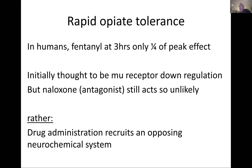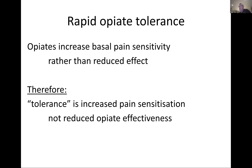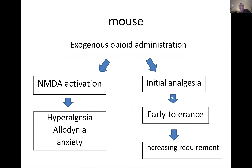Tolerance is not only due to down-regulation of mu receptors. We use a lot of fentanyl, which is short-acting, and at three hours it's only giving you a quarter of its peak effect. In a scoliosis operation running fentanyl intravenously, within the same operation your same dose has an exponentially lesser effect. Initially this was thought to be due to down-regulation of mu receptors, but naloxone still acts, showing mu receptors are still present.